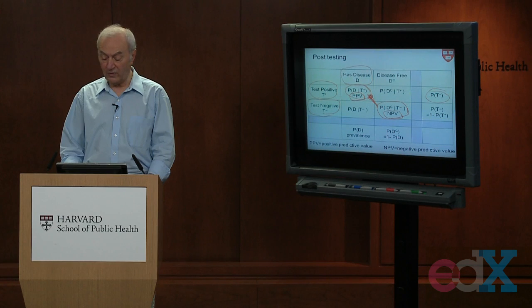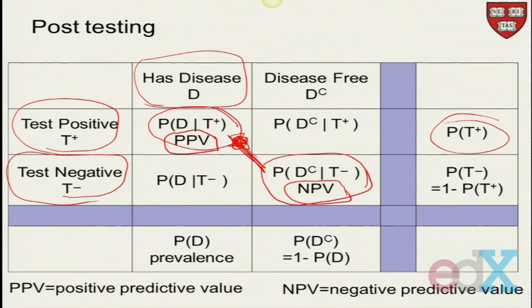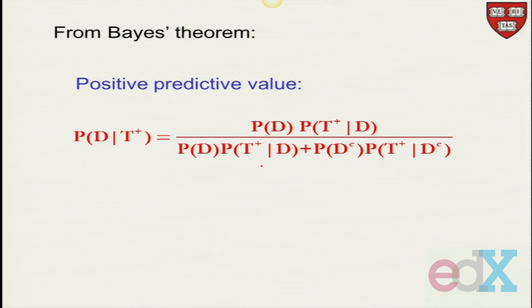But the point to remember here is that prior to testing, we've got one set of measures: sensitivity and specificity. Post-testing, we've got another set of measures, called the positive predictive value and the negative predictive value. So there is the formula for the positive predictive value. We've got it straight out of Bayes' theorem.